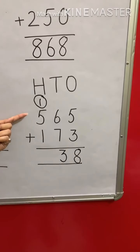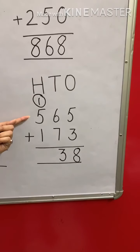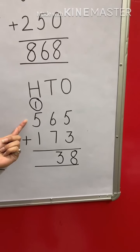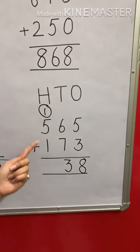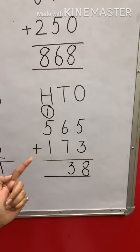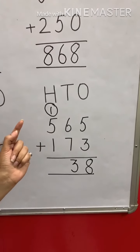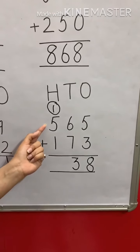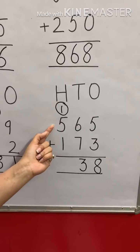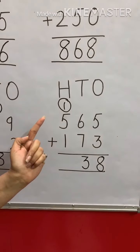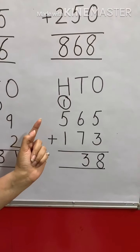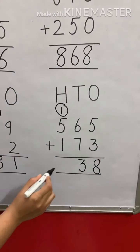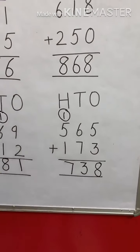Now at the hundreds place: digit is 5, with 1 block for the hundreds digit and 1 block for the carried over 1. After 5 I need to move further: 6 and 7. So my answer is 7.